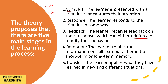Transfer is the next stage. The learner applies what they have learned in new and different situations. So to summarize the five main stages: stimulus is the outside factor that affects the learner; the learner gives a response to that; the learner receives feedback; the learner retains the skill or information; and finally, the learner begins applying it.